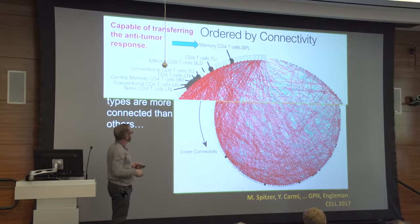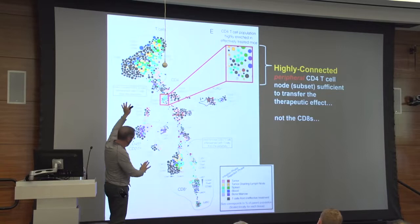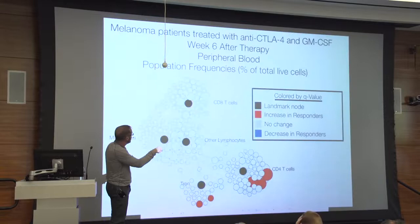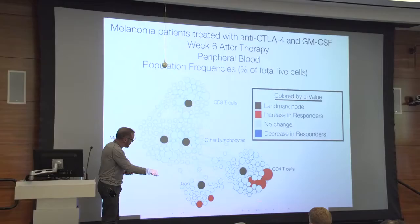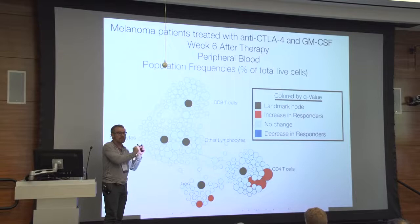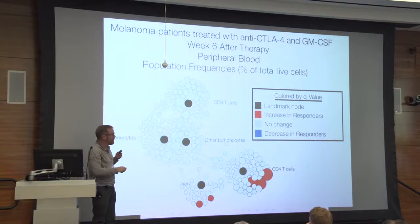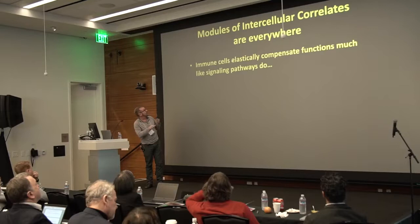That result broke two dogmas: one, it was the periphery and not the tumor-infiltrating cells that was important for the anti-cancer effect; and two, it was a CD4 cell doing most of the work. We then looked at human studies with data from similar anti-tumor therapies, and a very comparable cell population arose. The finding suggests that for certain kinds of immunotherapies this is the signature of an effective anti-cancer response — that particular CD4 memory T cell — which was validated in melanoma trials in humans.